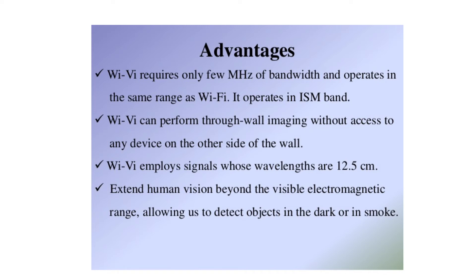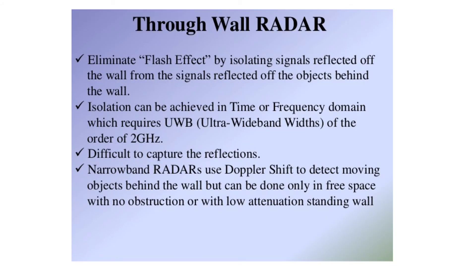It operates in the 2.4 GHz ISM band and needs only a few megahertz because it is used at close range. Wi-Vi can perform through-wall imaging without access to any device on the other side of the wall, using only one device to identify people standing inside a room.